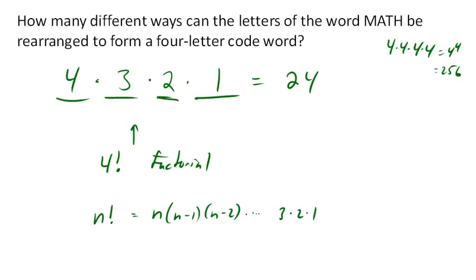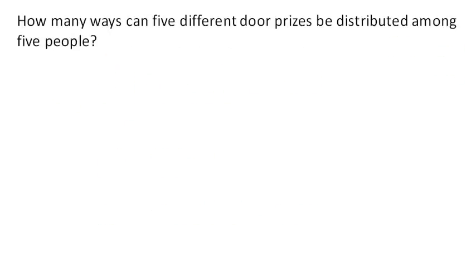Let's look at another problem. How many ways can five different door prizes be distributed among five people? So we've got five people and we've got five different prizes. So how many choices are there for the first person? Five. How about for the second? Four, three, two, and one, or in other words, five factorial.